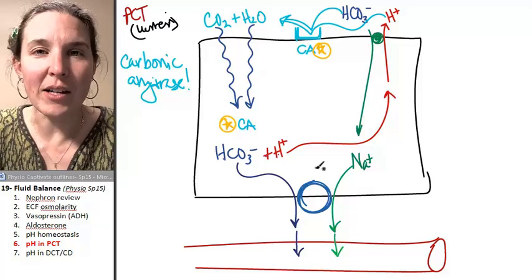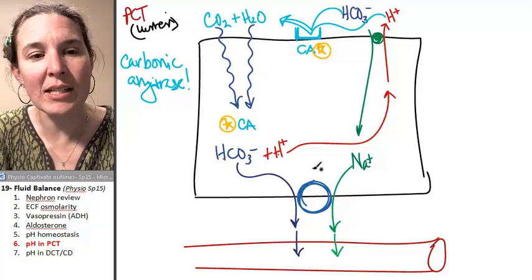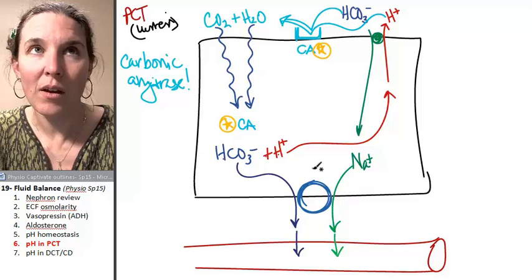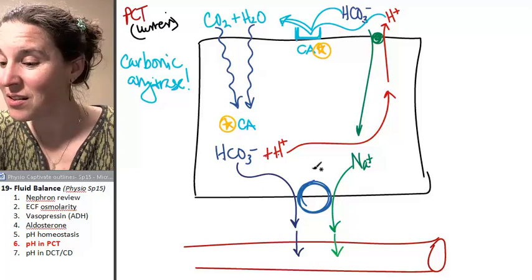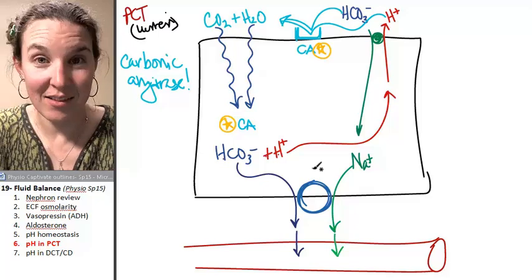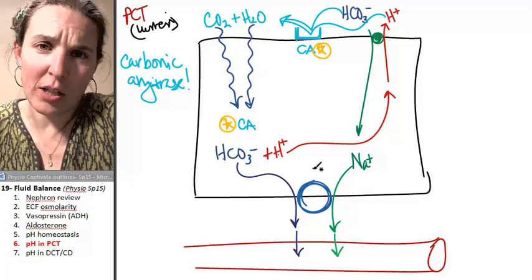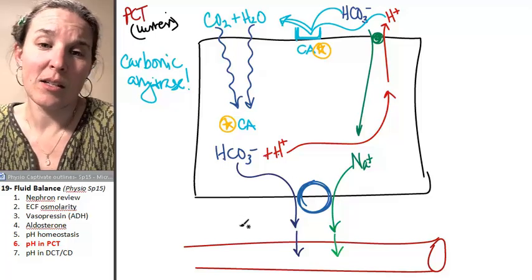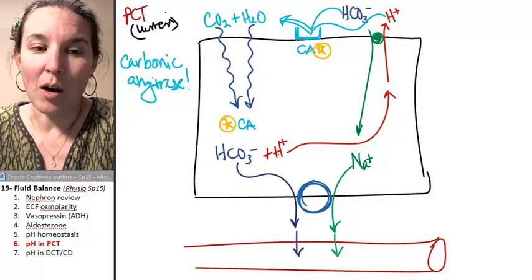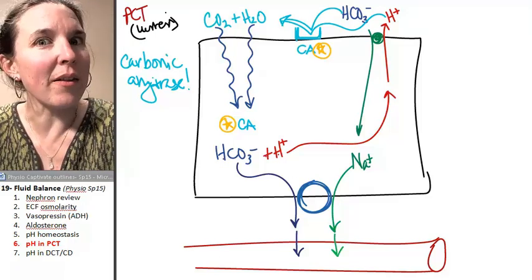Now, how do we fine-tune it? The fine-tuning is going to happen with intercalated cells in the collecting duct and the distal convoluted tubule. I'll be right back to tell you all about that.